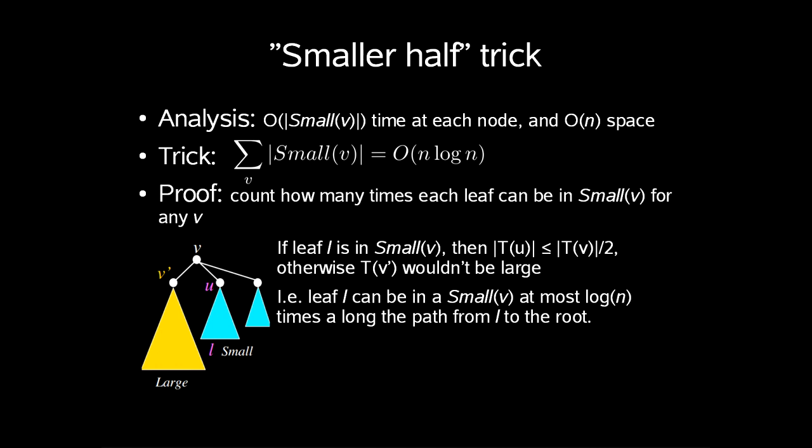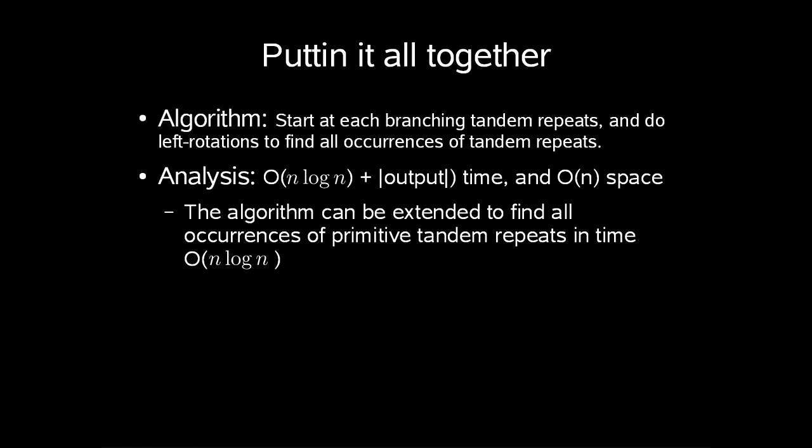So our analysis gives us a running time of O(n log n). Just to put this all together, we start at each occurrence of a branching tandem repeat and do a series of consecutive left rotations to find all occurrences of tandem repeats. The time analysis will give us a bound of O(n log n) plus length of the output. The algorithm can be extended to find all occurrences of primitive tandem repeats in time O(n log n).